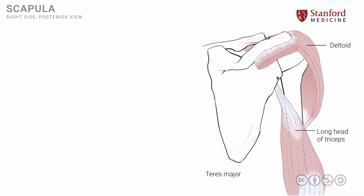A second muscle here is known as the teres major muscle, which we have looked at in a previous lesson. This muscle has its attachment onto the inferior part of the posterior scapula, and the fibers then go laterally and superiorly to attach onto the humerus. Note the very important relationship: the teres major fibers are anterior to the long head of the triceps. This is an important relationship to keep in mind.